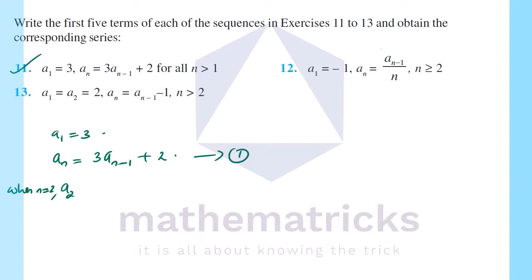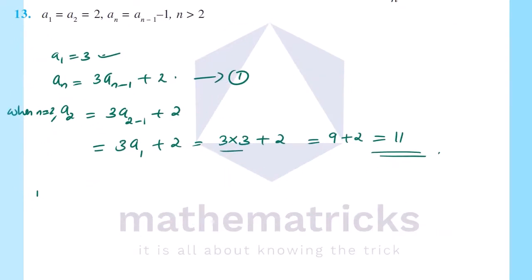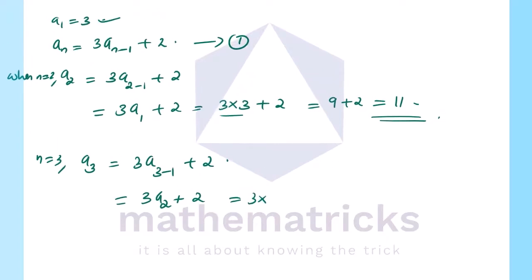For question 11, a₁ = 3 and aₙ = 3aₙ₋₁ + 2. When n = 2: a₂ = 3a₁ + 2 = 3 × 3 + 2 = 9 + 2 = 11. When n = 3: a₃ = 3a₂ + 2 = 3 × 11 + 2 = 33 + 2 = 35.